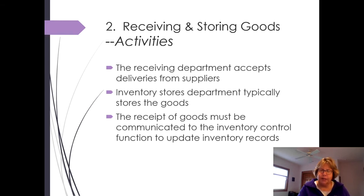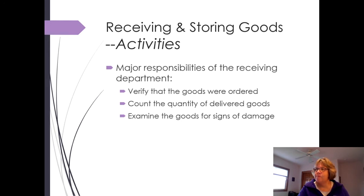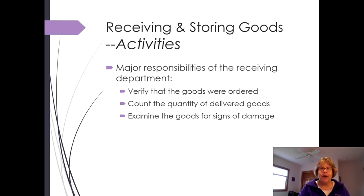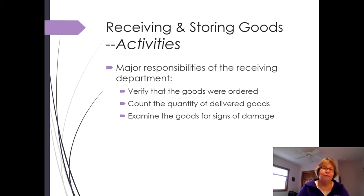If you have a large ERP system, once those goods are entered as received, that entry is usually made automatically into inventory. The major responsibilities of the receiving department are: first, verify that the goods are ordered — do we have a purchase order number and does it match the types of goods on that PO? Then they should count the delivered goods. Depending on what it is, you may count boxes — for example, if you ordered 10,000 bolts, they probably come in boxes of a hundred or a thousand, and you would count those individual boxes.